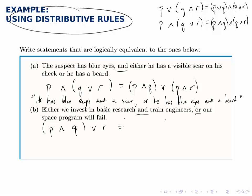Again, with the distributive rule, we can distribute the OR across this parentheses, so we have P OR R, and Q OR R.